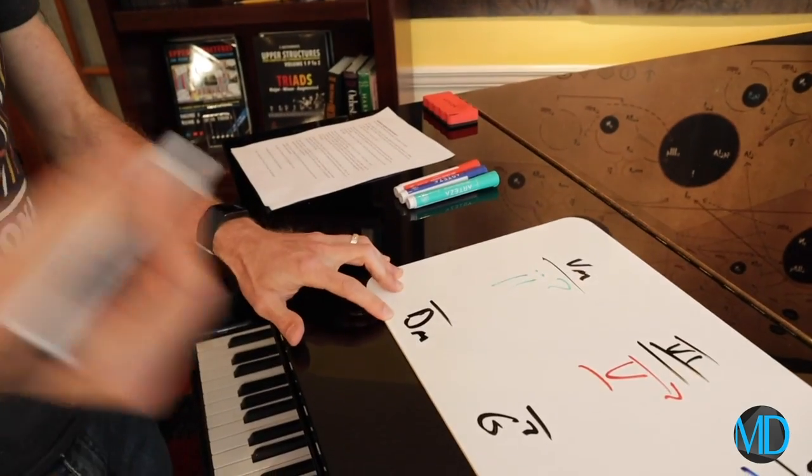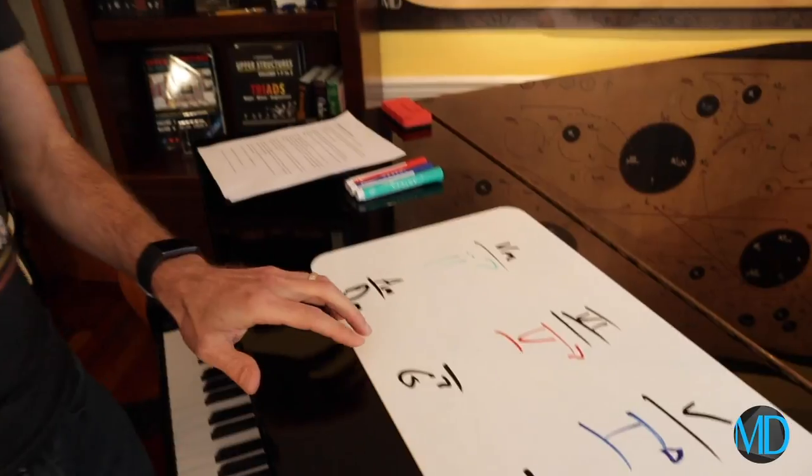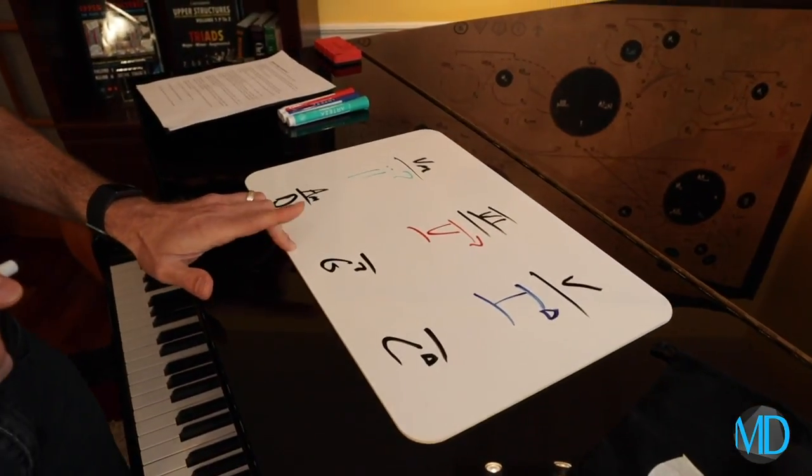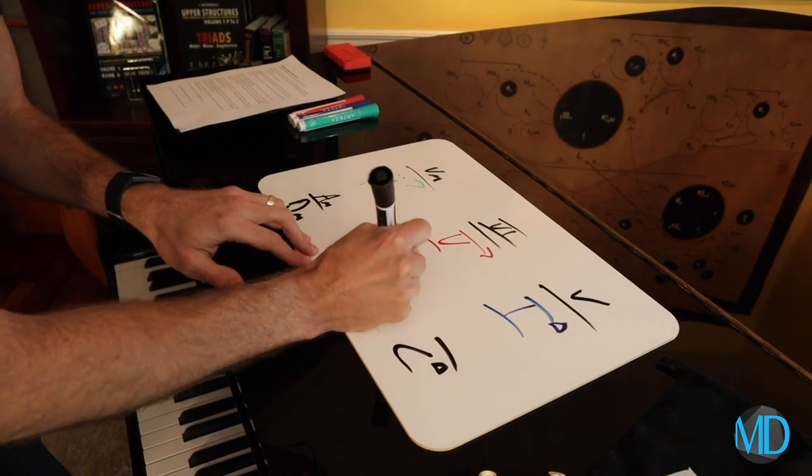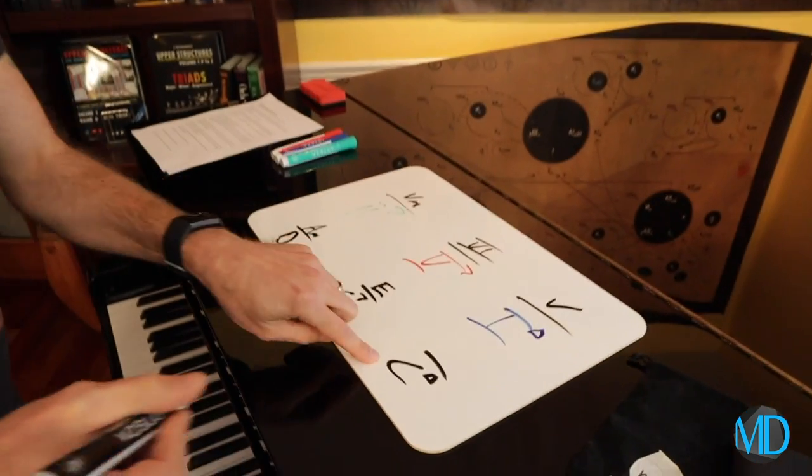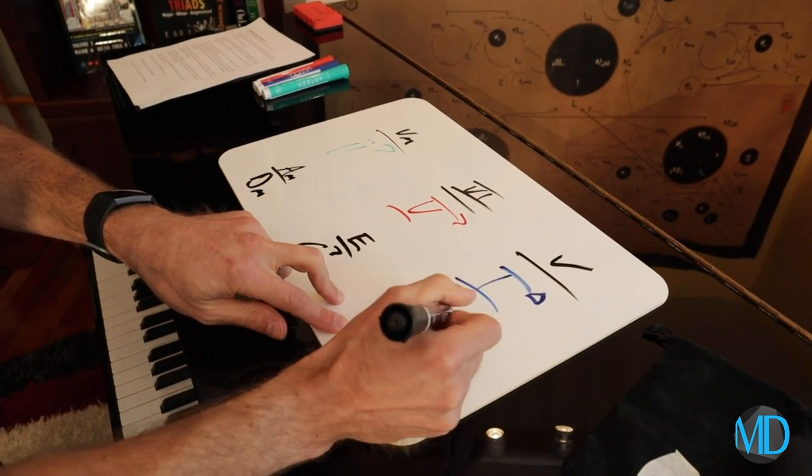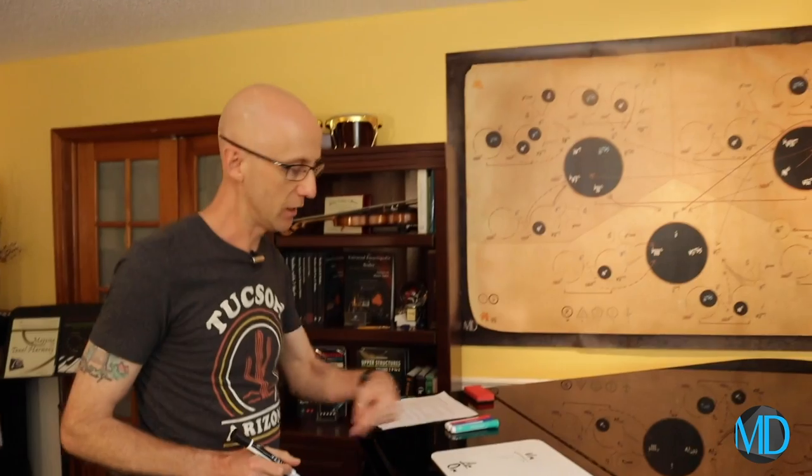The five of D is A, so I'm doing an A minor over D minor. The six of G is E and it's a major chord, so I'm playing E major over G7. And the five of C is G. Here we go: A minor over D minor, E over G7, and G over C. Let's check out what this actually sounds like.